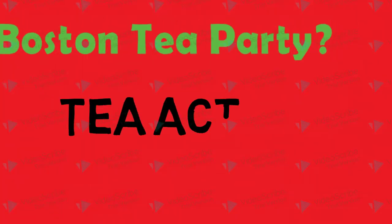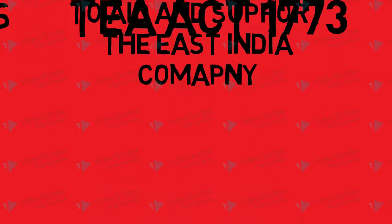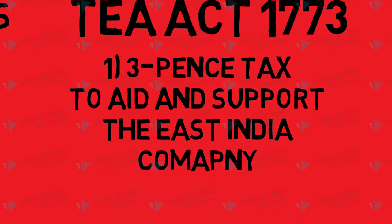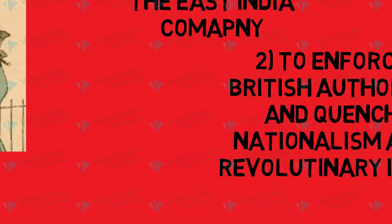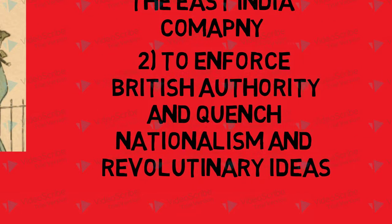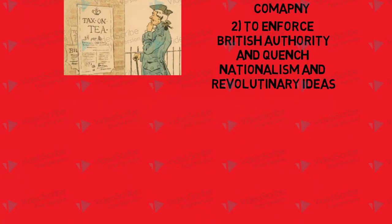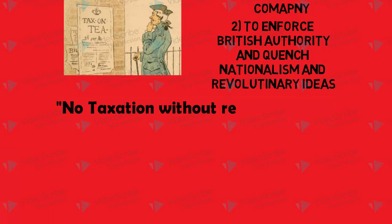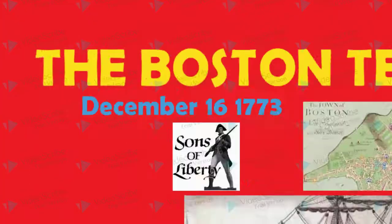The tax itself was a small 3-penny tax to help the East India Company stay afloat, but it was also used to show authority from Britain onto the colonies. The colonists chanted 'no taxation without representation' because they saw the taxes as unfair and as an attempt to control the people of Boston and America.